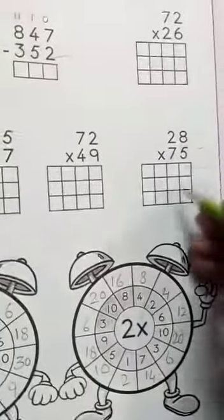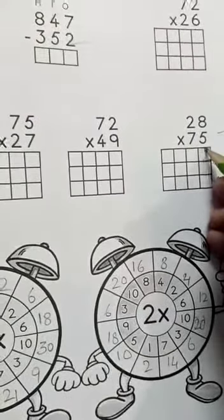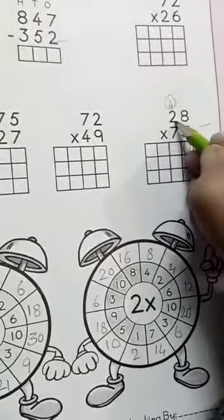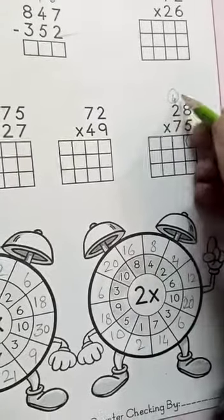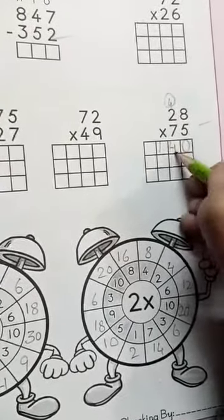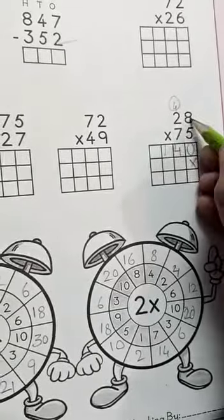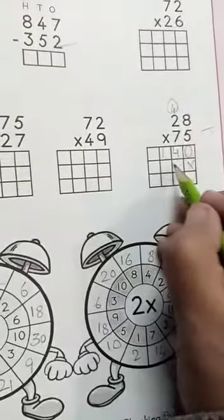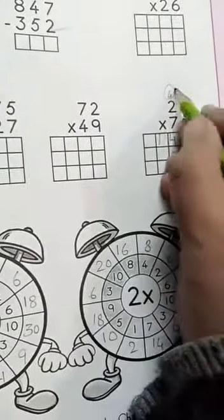We will start with the 5 table. 5 eights are 40. 4 carry will come. Then 5 twos are 10. 4 plus 10 is 14. Then 7 eights are 56. 56 will be 6, 5 will carry.